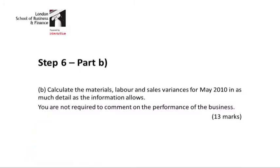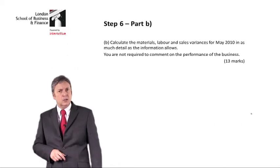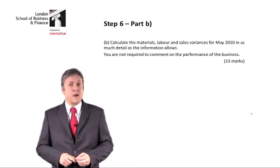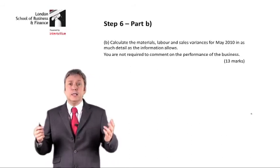Here is our requirement: calculate the material, labour, and sales variances for May 2010 in as much detail as the information allows. Note the second sentence — you are not required to comment on the performance of the business. You've done that comment part in Part A. So all we're doing in Part B is calculating variances.